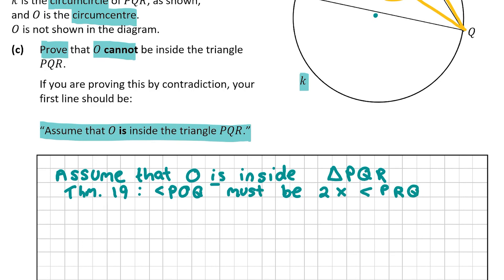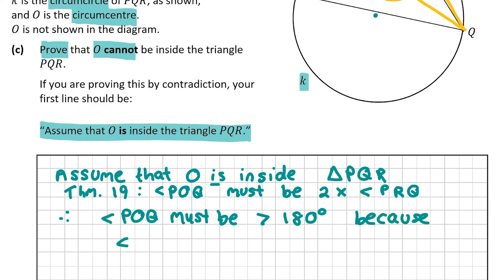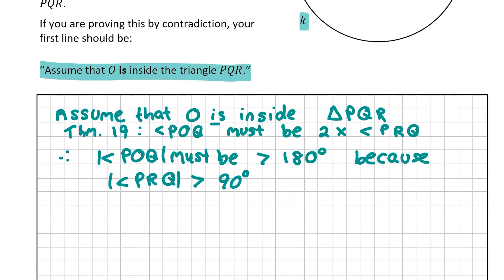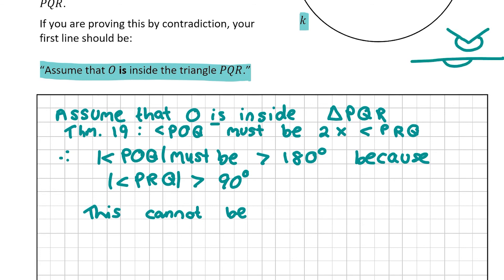Theorem 19 tells us that angle POQ, standing at the center on the same arc, is twice angle PRQ at the circumference. Therefore, angle POQ must be greater than 180 degrees, because angle PRQ is greater than 90 degrees. But this cannot be — an angle greater than 180 degrees would be greater than a straight line, which makes no sense. Therefore, O cannot be inside the triangle PQR.